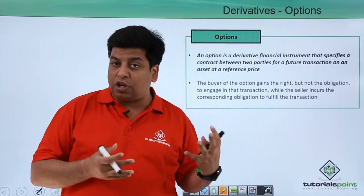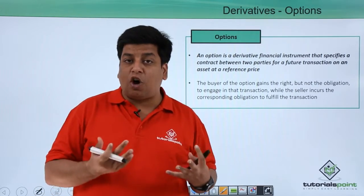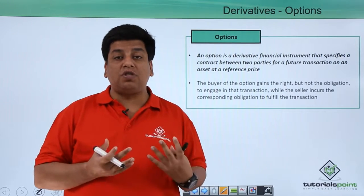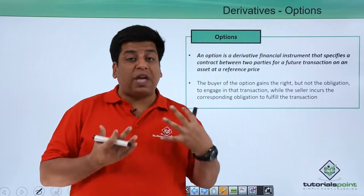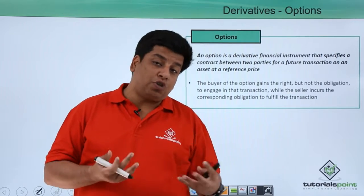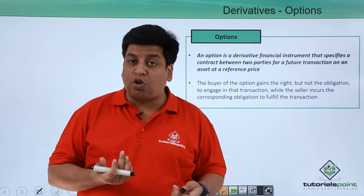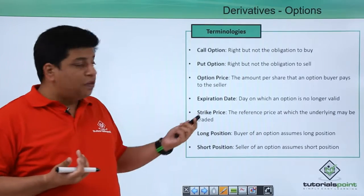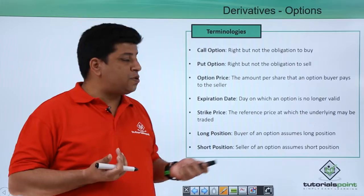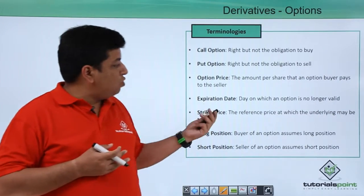If an option gives you the right to buy but not an obligation to buy, that is called a call option. If an option gives you the right to sell but not an obligation to sell, that is called a put option. So the first key term is call option — a right but not an obligation to buy — and put option — a right but not an obligation to sell.